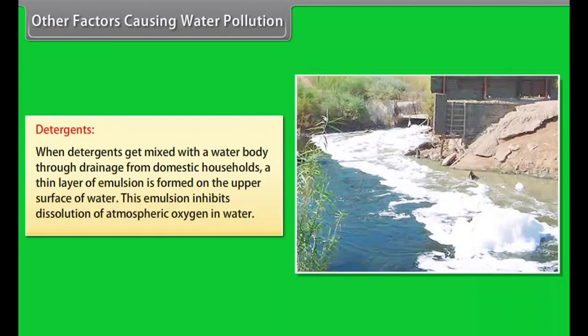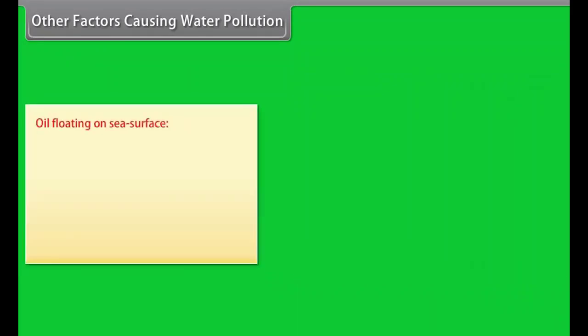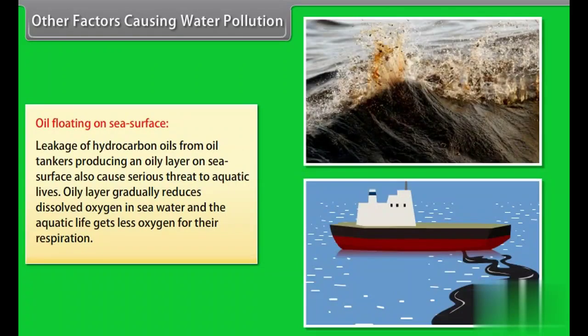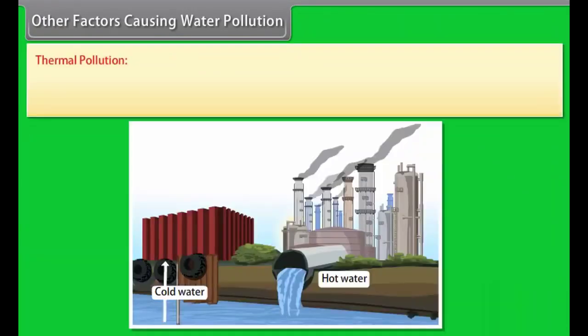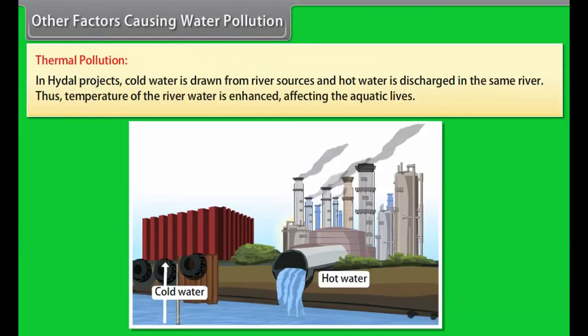Other factors causing water pollution. Detergents: When detergents get mixed with the water body through drainage from domestic households, a thin layer of emulsion is formed on the upper surface of water. This emulsion inhibits dissolution of atmospheric oxygen in water. Oil floating on sea surface: Leakage of hydrocarbon oils from oil tankers producing an oily layer on sea surface also cause serious threat to aquatic lives. Oily layer gradually reduces dissolved oxygen in seawater and the aquatic life gets less oxygen for their respiration. Thermal pollution: In hydel projects, cold water is drawn from river sources and hot water is discharged in the same river. Thus, temperature of the river water is enhanced, affecting the aquatic lives.